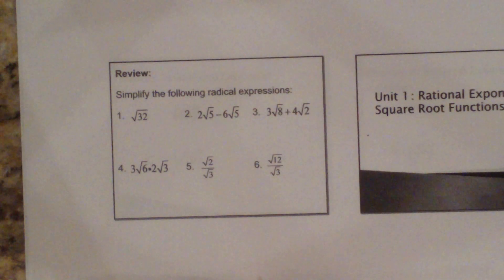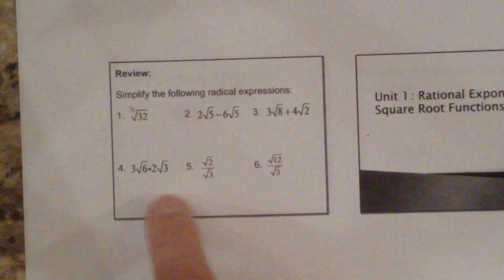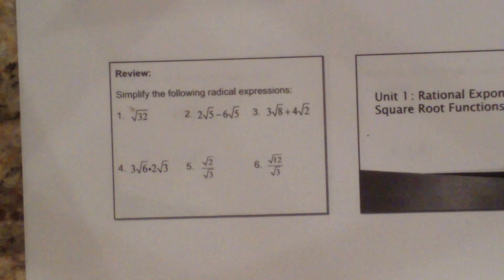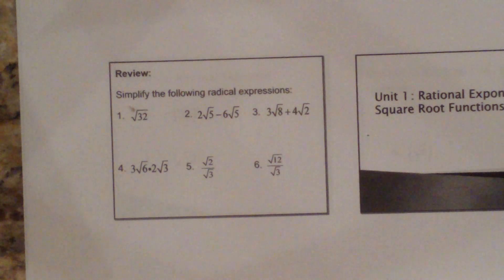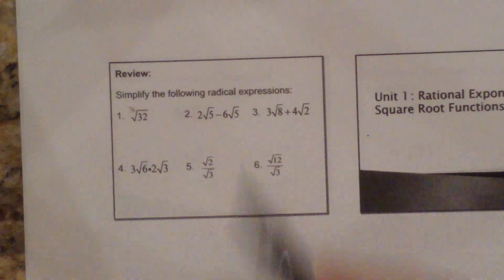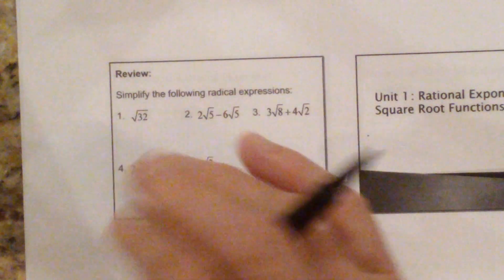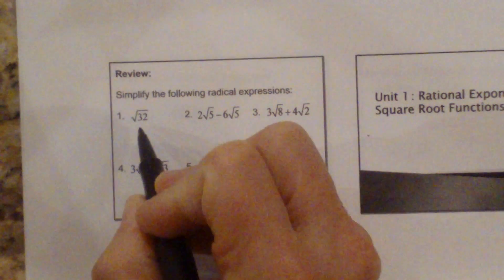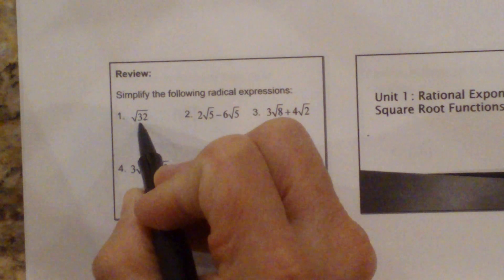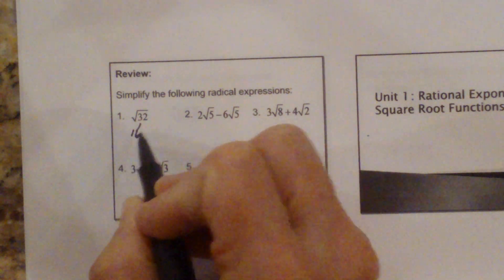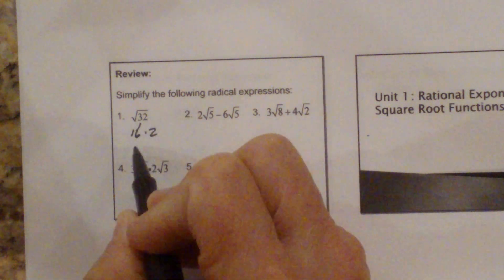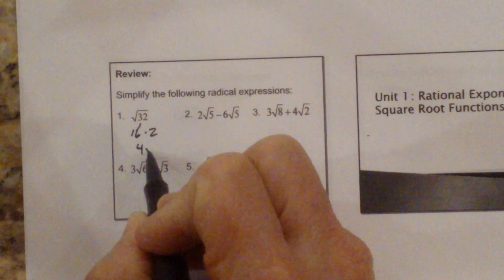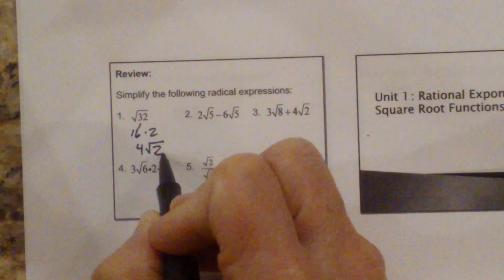I want you to stop the video here and work these out and then we can check our answers. The answer to this one: you're going to take the square root of 32 and break it down into 16 times 2. So that's going to be 4 square root 2.